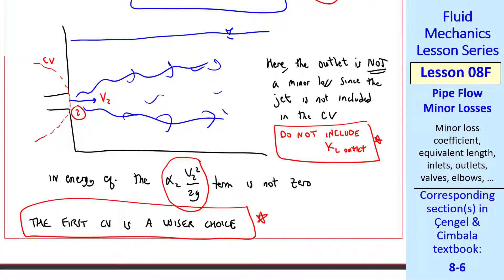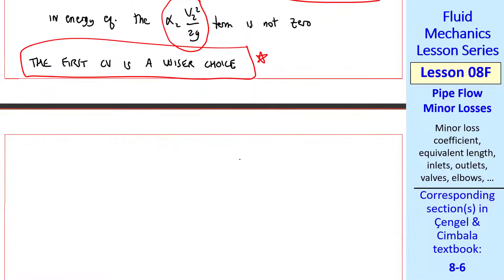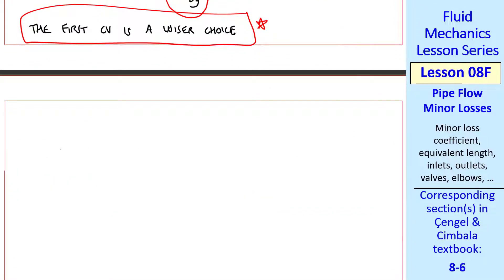If you happen to have a pipe that exits into the atmosphere, say a water pipe exiting into P atmosphere, you would pick your control volume like this, and this speed would be V2 and there would be an alpha 2, and your control volume doesn't care what happens to this water outside the control volume.